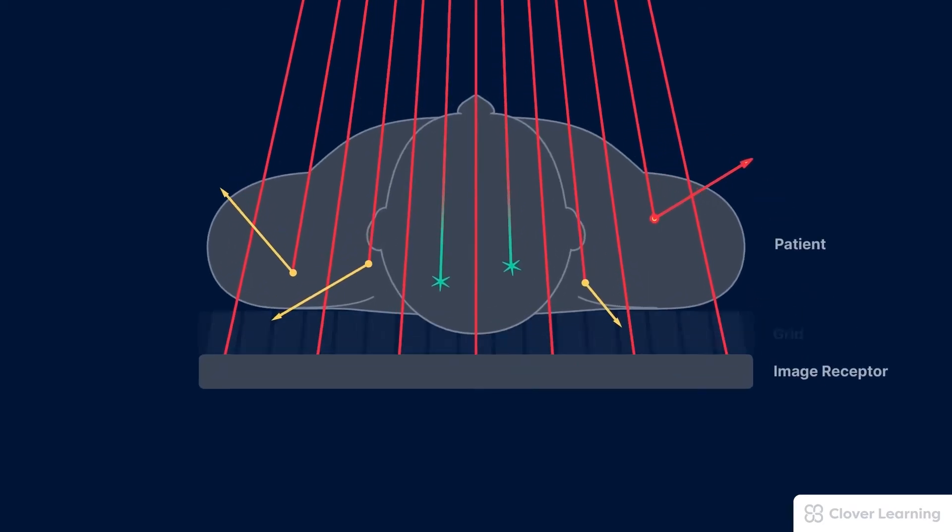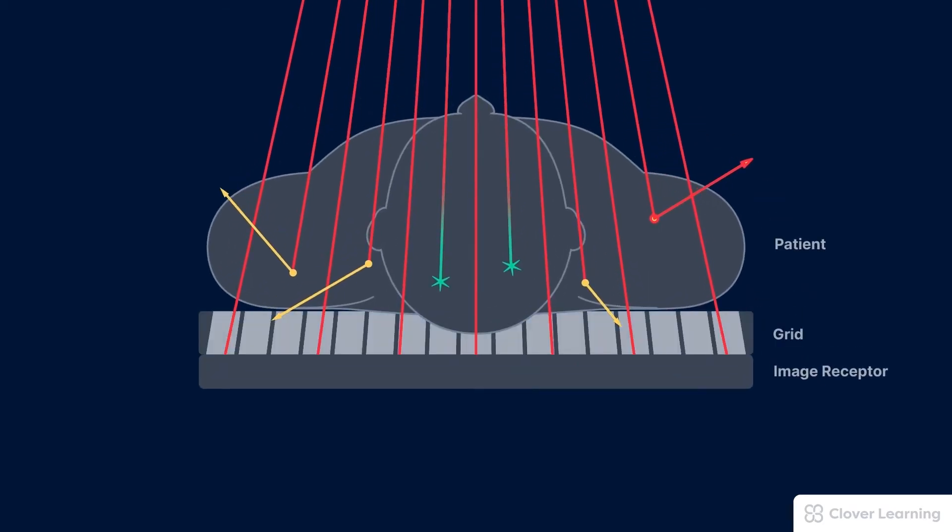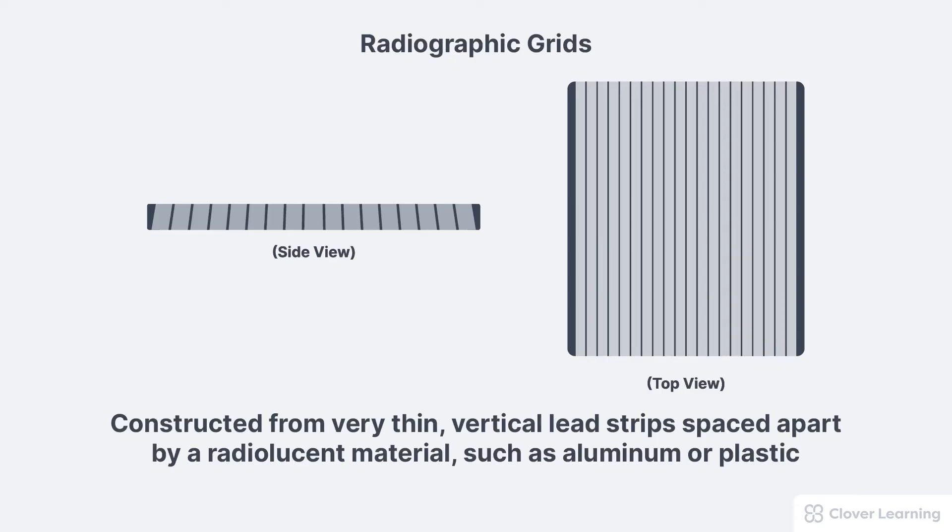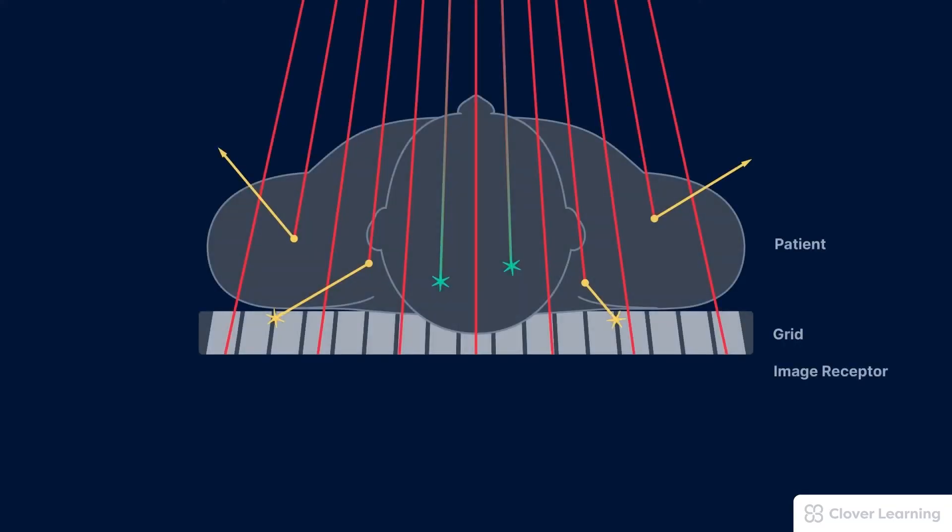So how do grids work? A grid is placed between the patient and the image receptor to absorb scatter before it strikes the image receptor. Grids do not decrease the production of scatter within the patient, but they do remove scatter from the beam before it strikes the image receptor and degrades the image quality. Grids are constructed from very thin vertical lead strips that are spaced apart by a radiolucent material, such as aluminum or plastic. Due to this vertical orientation of the lead strips, transmitted photons from the main beam that carry good information are allowed to pass right through the grid to the image receptor, and that's what we want.